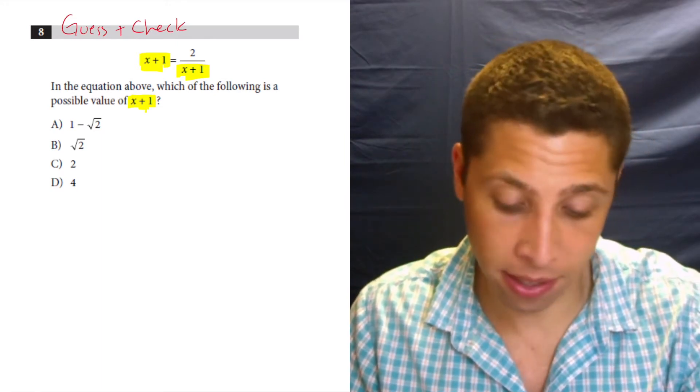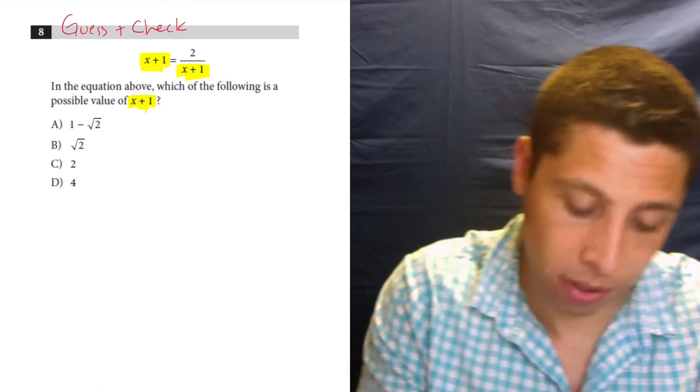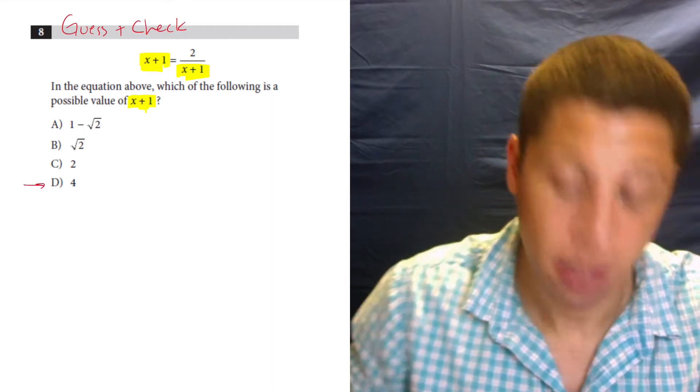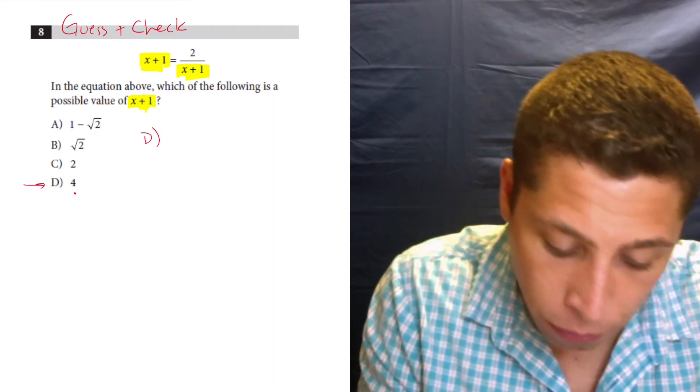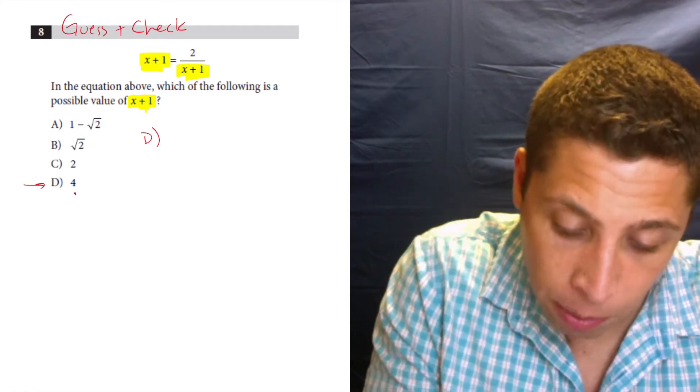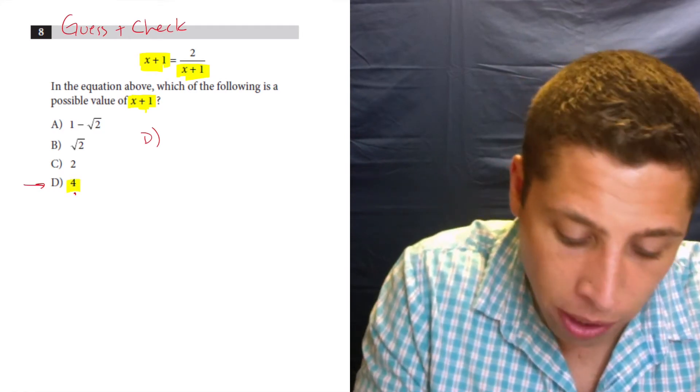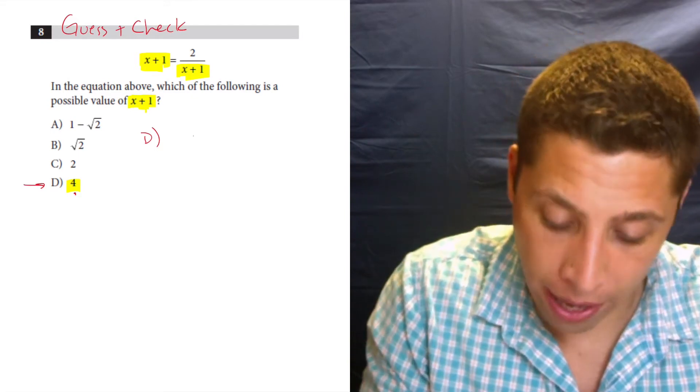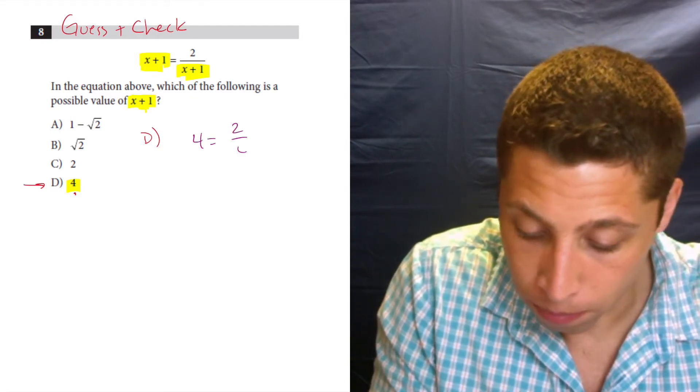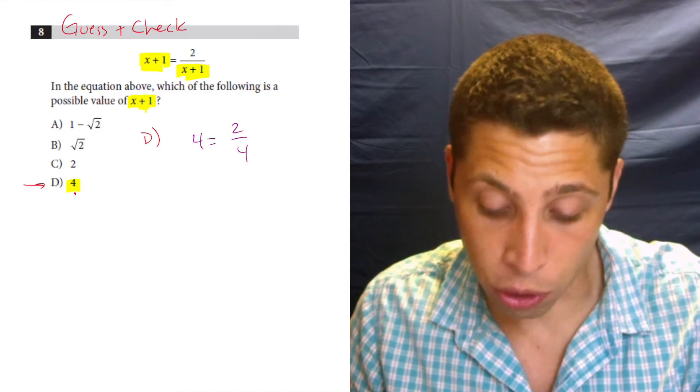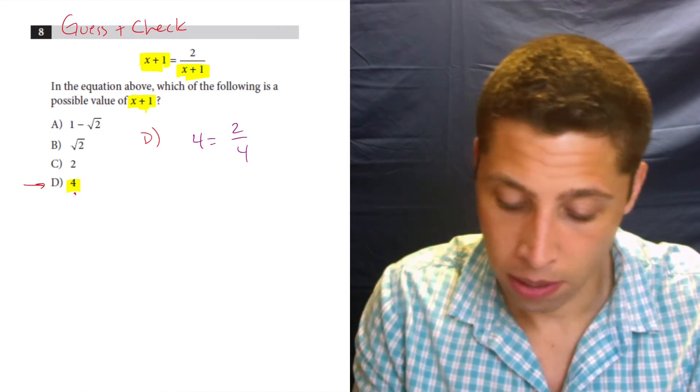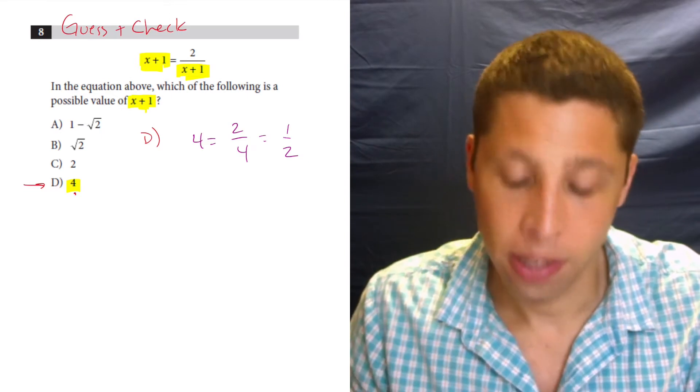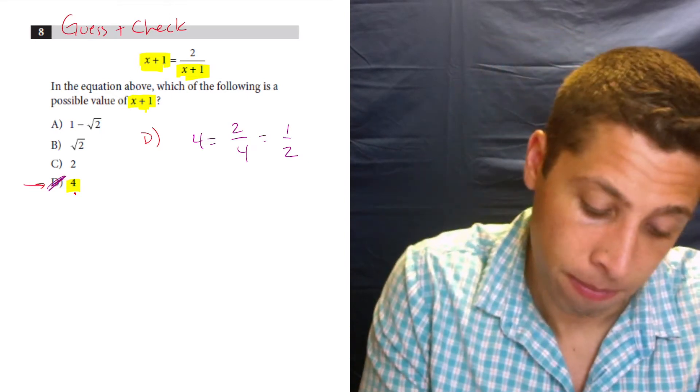So let's start with the easiest thing. Let's start at the bottom: four. If I wanted to test out choice D, what would I do? I would put four in for X plus one. Let's make sure we understand that is substituting for that. And if we can do that, this is really simple. Four is equal to two over four. Well, is it? No, because two over four is equal to a half. So four is not equal to a half. Gone.